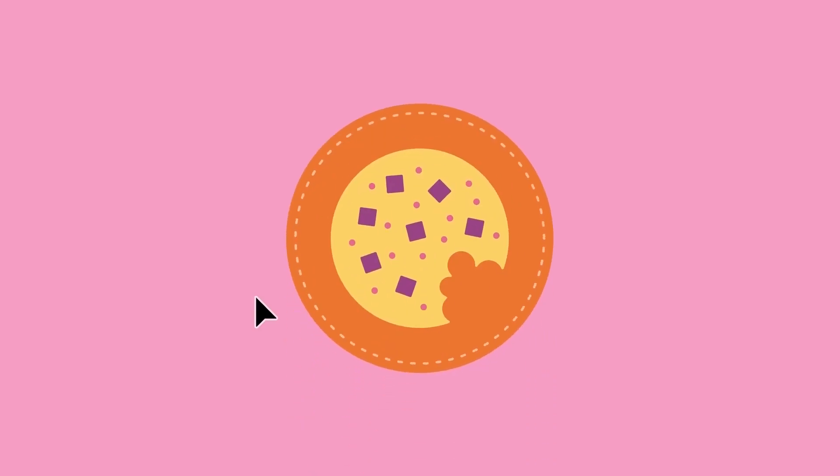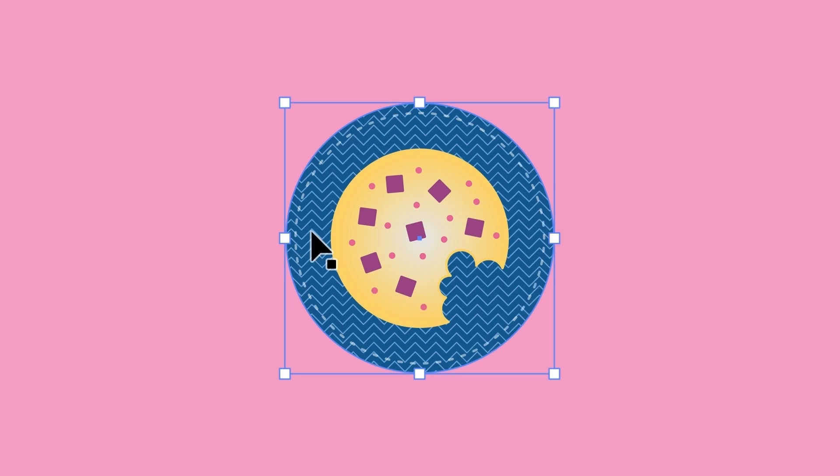Now the stroke and fill for shapes can be a solid color, but you can also apply a blend of colors called a gradient, maybe to add some depth, or a repeating pattern, maybe to show some texture.